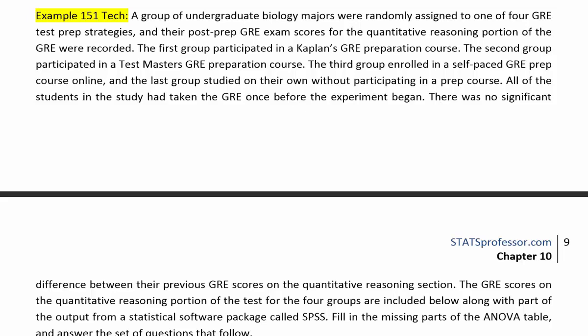Example 151. A group of undergraduate biology majors were randomly assigned to one of four GRE test prep strategies, and their post-prep GRE exam scores for the quantitative reasoning portion were recorded.